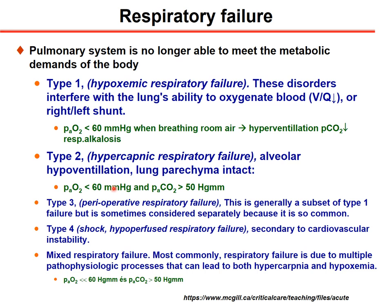Type 3 is a very rare form called perioperative respiratory failure, which usually develops during gastric operations when the patient develops reversible lower lobe atelectasis. It is usually considered a subset of type 1 respiratory failure. Type 4 respiratory failure is associated with circulatory shock or hypoperfusion respiratory failure, diagnosed as cardiogenic shock, distributive shock, or hypovolemic shock.